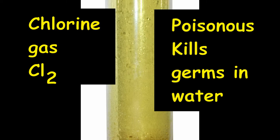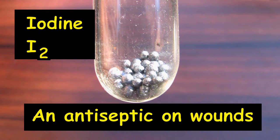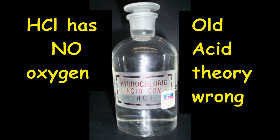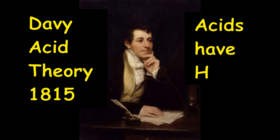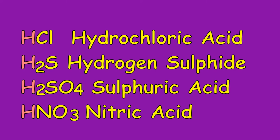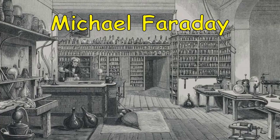Electrolysis also produced non-metals: chlorine, which he named and proved to be an element, as well as iodine. His big contribution to acid-base theory was his discovery that the acid made from salt — now known as hydrochloric acid — contained no oxygen. The Lavoisier theory was in error. In 1815 Davy published his own acid theory: hydrogen, not oxygen, was what gave acids their properties. The fact that there were acids such as hydrochloric acid and hydrogen sulphide gas that contained no oxygen was the proof. Davy died young in Geneva. It was up to others to build on his insight.